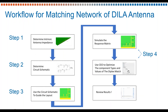We think of matching networks as about a four-step process in XF. Step one is to characterize our unmatched antenna and understand its performance. Step two, once we have the antenna characterization, we can build out and design a schematic and decide what topology we need in order to generate the match that we want.